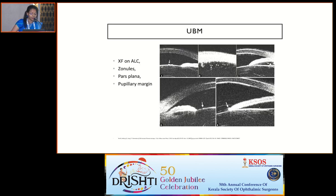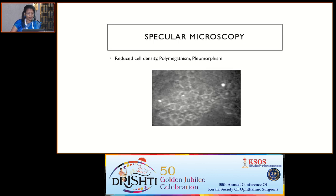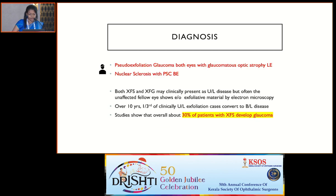UBM is of great importance here because you can detect pseudo-exfoliative material on the zonules, which is an earlier sign, apart from finding it on the anterior lens capsule — both the central and peripheral portions. Specular microscopy is important especially if you are planning any type of surgery in pseudo-exfoliation cases.